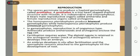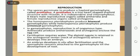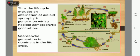In gametophyte, reproduction is of oogamous type. Antheridia produce antherozoids and archegonia enclose the egg. Fertilization requires water. The diploid zygote is retained in the archegonial venter where it develops into an embryo. The embryo develops in situ after fertilization and the sporophyte remains attached to the gametophyte until the development of roots. The life cycle of pteridophyte includes an alternation of diploid sporophytic generation with a haploid gametophytic generation, with the sporophytic generation being dominant.